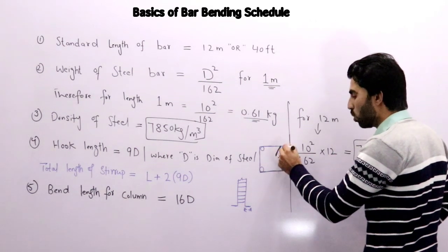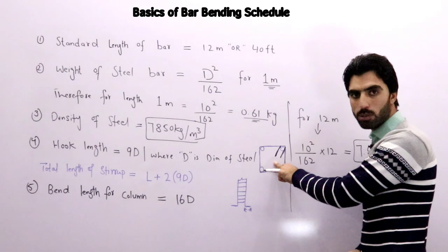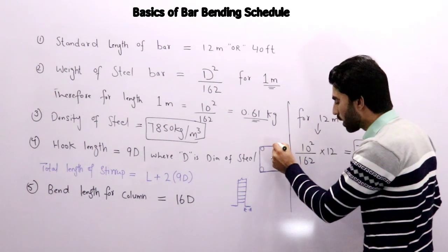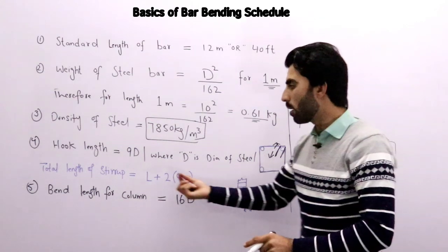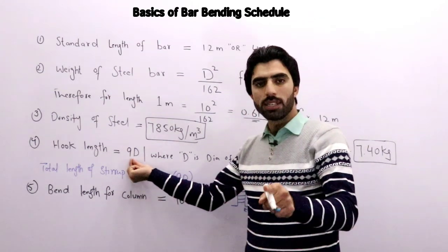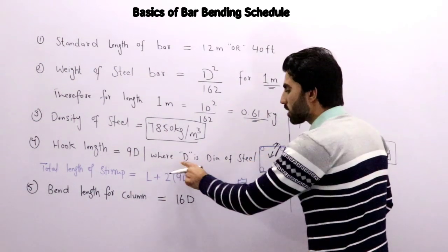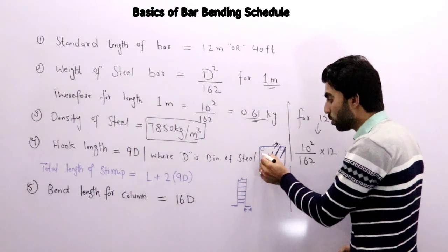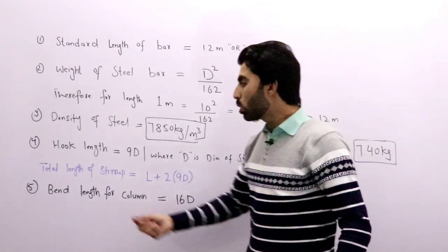We can find hook length with the formula 9D. 9 is a constant value and D is the diameter of steel bar which is used in the stirrup. Now, total length of stirrup: if you want to find total length of stirrup with hooks, total length of stirrup equals L.